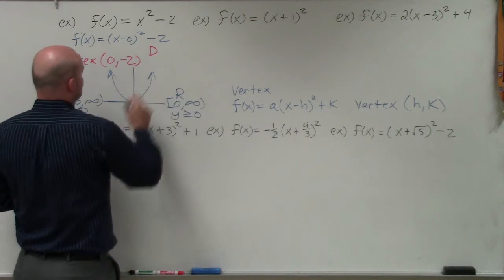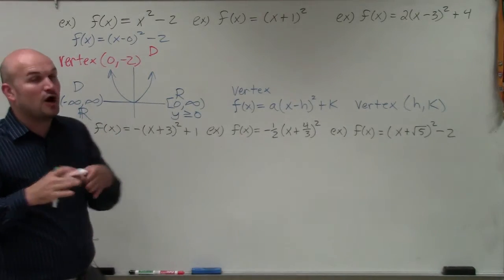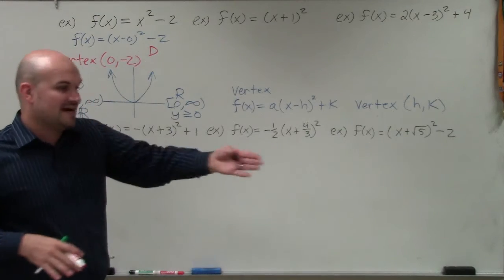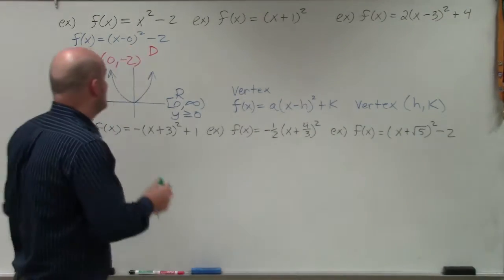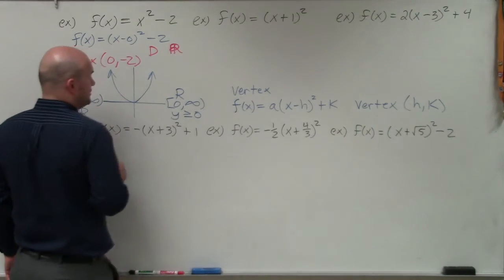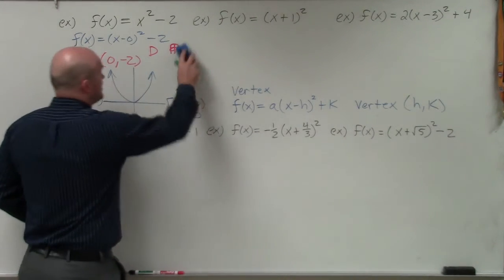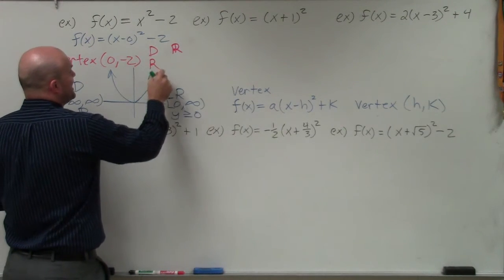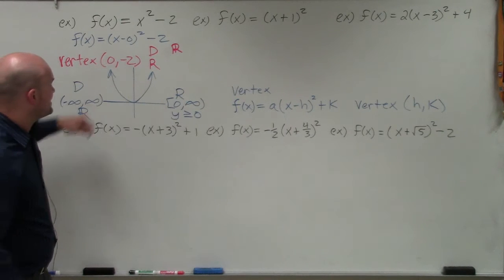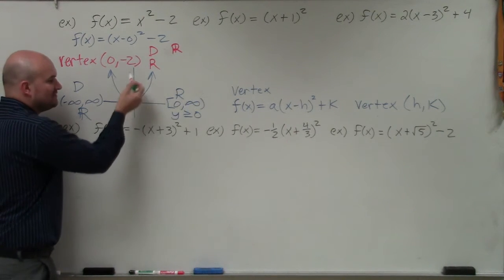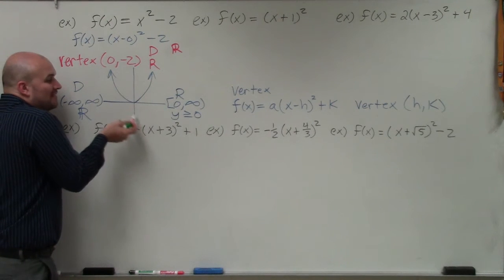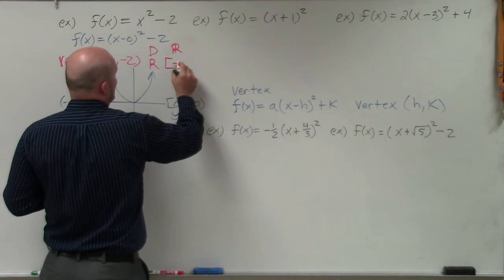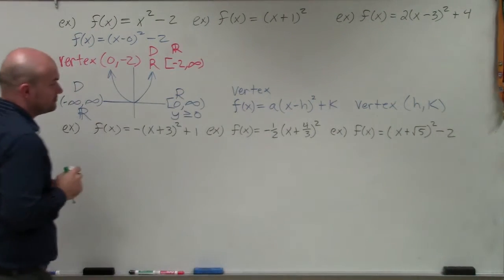The domain for all of these is always going to be all real numbers, because it doesn't matter if the graph is shifted up, shifted left, right, or down — the graph is always going to expand. So the domain is all real numbers. However, for the range, you can see that the vertex has been shifted down two units to 0, negative 2. So now that's the low point, and the graph still goes up — the range is going to be from negative 2 to infinity.